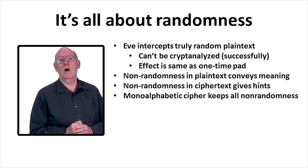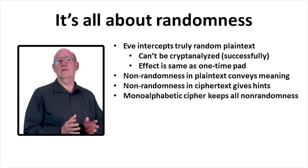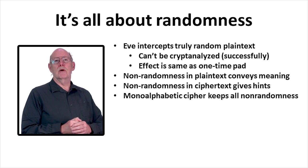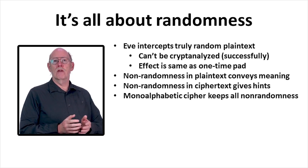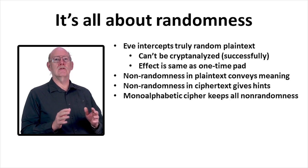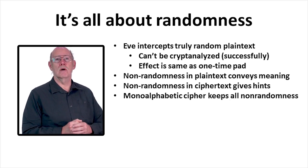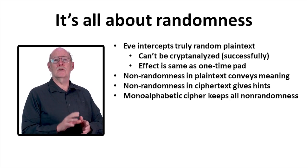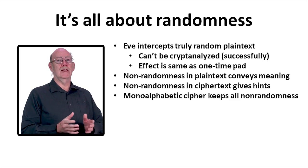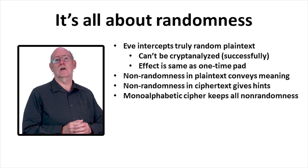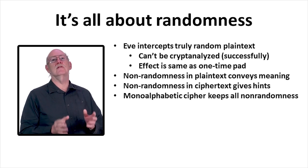In the case of a monoalphabetic cipher, none of the structure of the plaintext is removed — we are simply using a different alphabet. Imagine someone growing up learning that the character A looks like P. In other words, they learn everything about the English language that we do, including the names and sounds of each character and the spelling of each word, but they just happen to use a different shape to write each letter. They would be able to read our ciphertext as though it were the plaintext because, to them, it is the plaintext. Thus it has all of the structure of the plaintext message, and it's a cryptanalyst's dream.